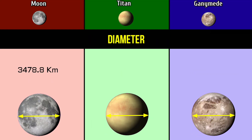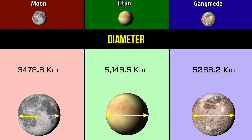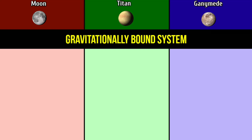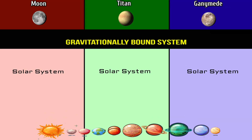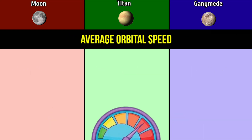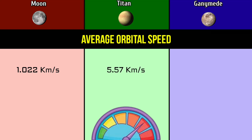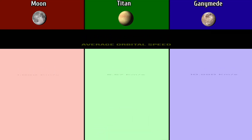Diameter: 3,478.8 kilometers for the Moon; 5,149.5 kilometers for Titan; 5,268.2 kilometers for Ganymede. Average orbital speed: 1.022 kilometers per second for the Moon; 5.57 kilometers per second for Titan; 10.880 kilometers per second for Ganymede.